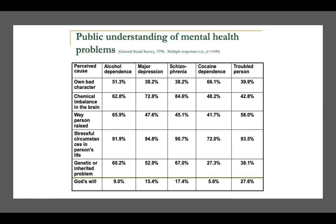This table outlines the general consensus as of 1996. At that time, people generally understood and believed that stressful circumstances contributed greatly to varying types of mental health issues. Most did not believe that it was purely, for example, God's will. There was some degree of genetic or heritability components, but that varied depending on what they identified as the mental health issue.